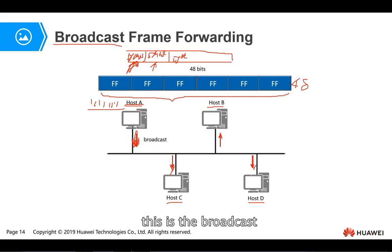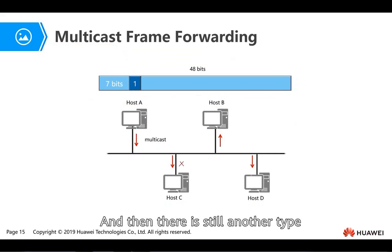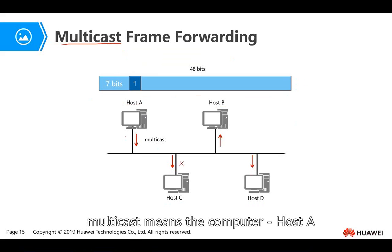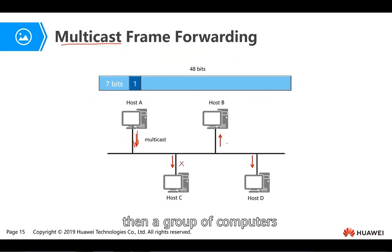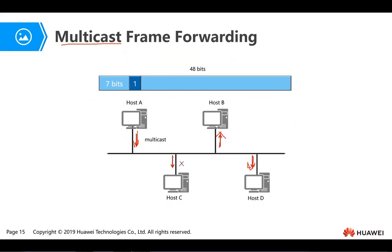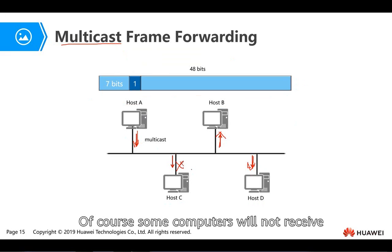So there are three types: unicast, broadcast, and multicast. Multicast means host A sends out a multicast frame and a group of computers — not all, and not just one — receives the frame. Some computers do not receive it, but more than one does.